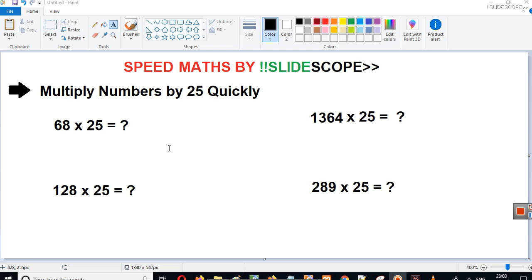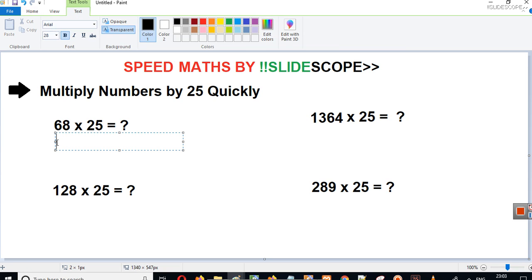So here we will try to calculate numbers when they will be multiplied by 25 quickly. If you have to multiply a number by 25, this is a very simple trick. When you have to multiply a number by 5, then you divide it by 2 and multiply it by 10. But when you have to multiply a number by 25, you divide it by 4.